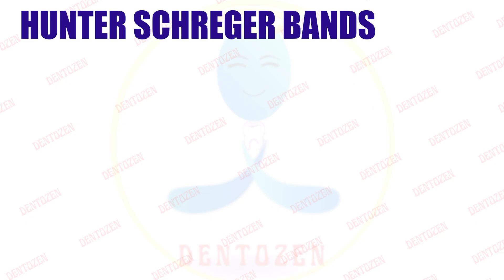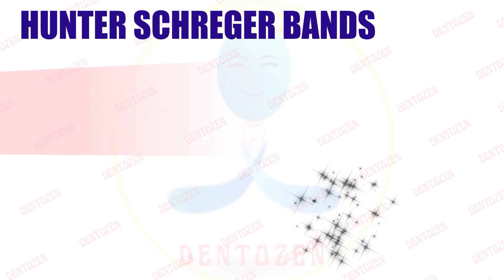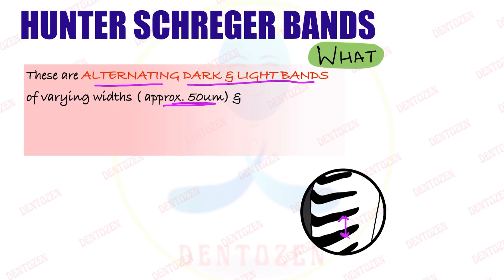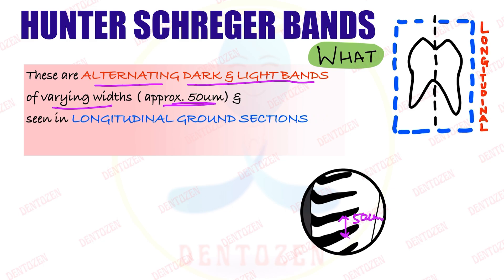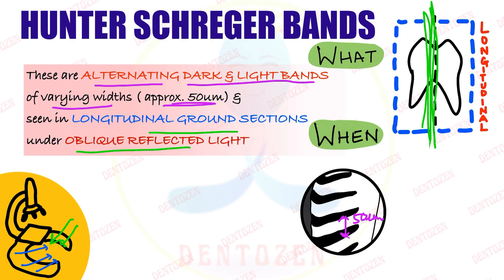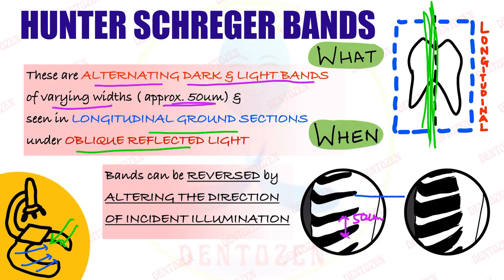What are these bands? They are alternating dark and light bands. Their width is approximately 50 micrometers, though they vary in width. When are they seen? When we cut longitudinal sections — that is, along the long axis of the tooth — and observe them under oblique reflected light. Also, we can reverse these bands: if we change the direction of the light, dark bands will become light and light bands will become dark. So the bands can be reversed by altering the direction of incident illumination.